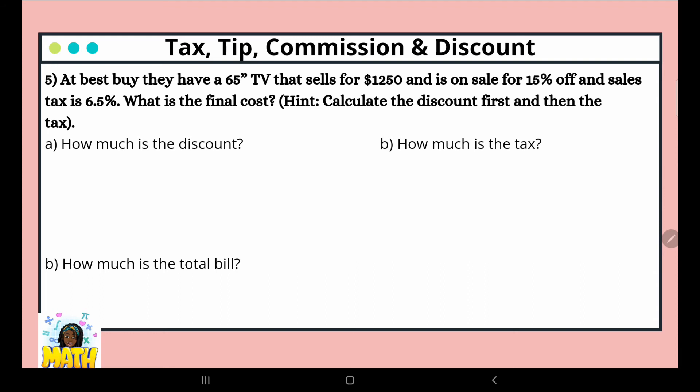At Best Buy, they have a 65-inch TV that sells for $1,250 and is on sale for 15% off, and the sales tax is 6.5%. What is the final cost? So for this problem, we'll have to calculate the discount, subtract it from the initial amount, and then we will calculate the tax based on the discounted amount. So let's set up our percent proportion.